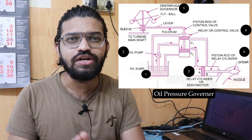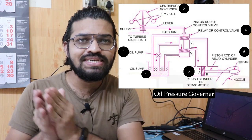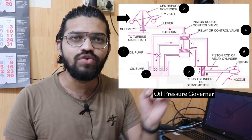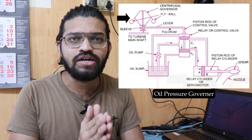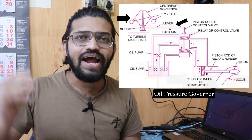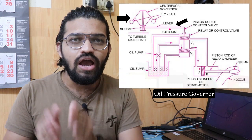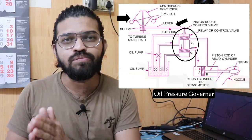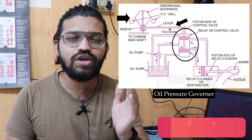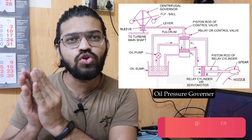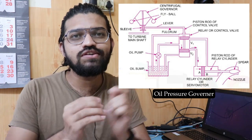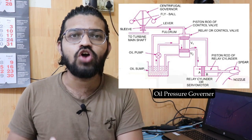When the turbine runs at constant speed, the oil pressure governor remains standstill. The governor has a centrifugal governor at the top with two balls connected to a sleeve. This sleeve is connected to a lever arm, which is pivoted at a fulcrum. The end of the lever arm is connected to the control cylinder, which has two openings V1 and V2, and two pistons that control these openings respectively.